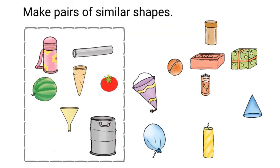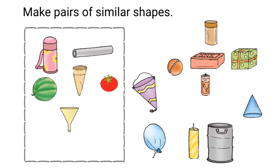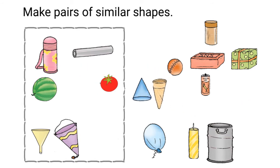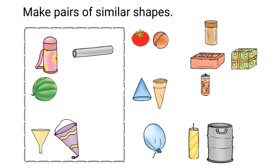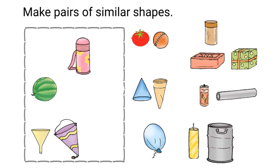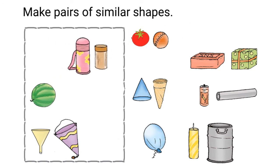This bar of soap looks like this gift. This barrel looks like this candle. This party hat looks like this funnel. This ice cream cone looks the same as this cone. This tomato and this ball look the same. This battery and this roll of foil look the same. This water bottle and this jar look the same. This watermelon and this balloon look the same.